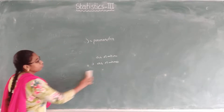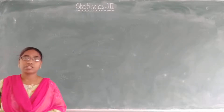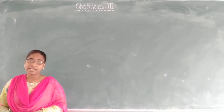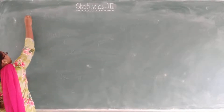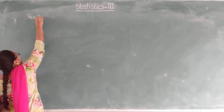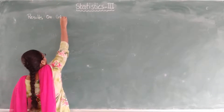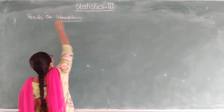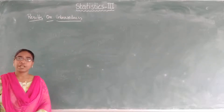Now we will see some results related to unbiasedness. First we will consider all the problems or results related to unbiasedness, and after that we will study the next characteristics. Today we are going to start the results of unbiasedness — these are very important problems.